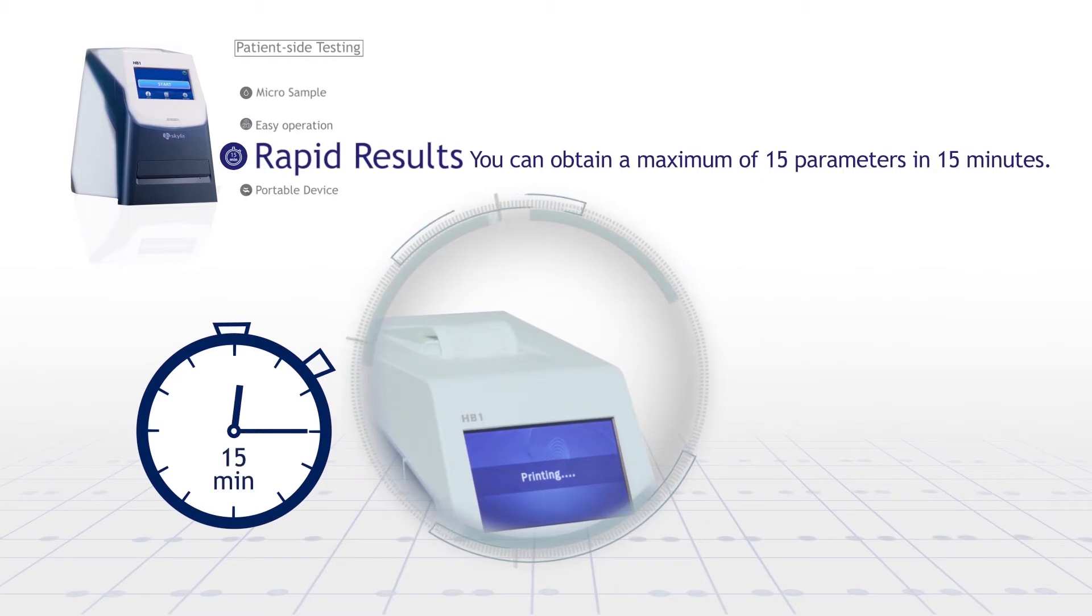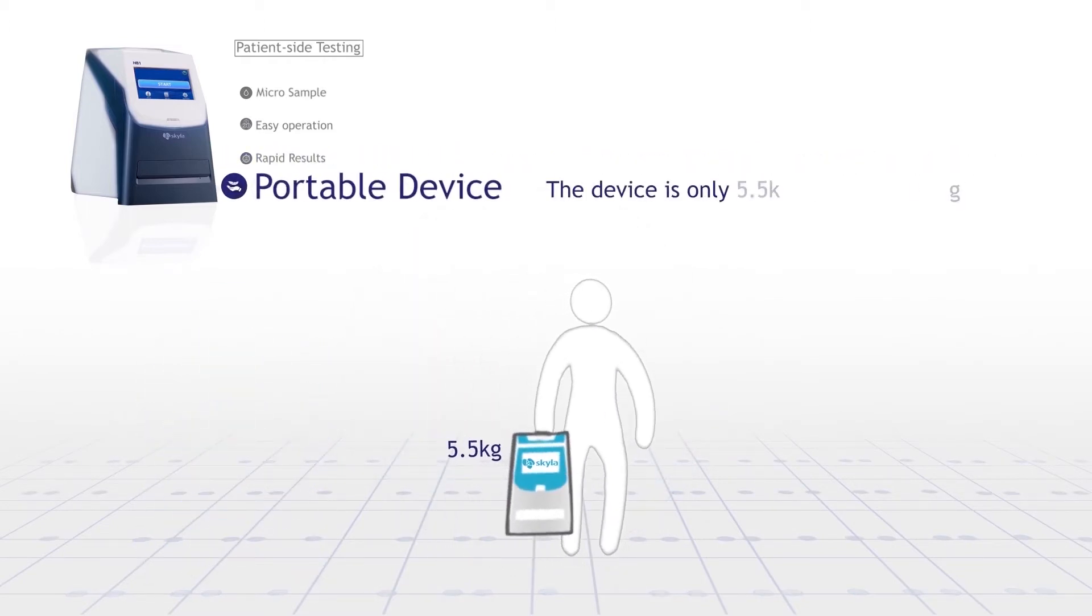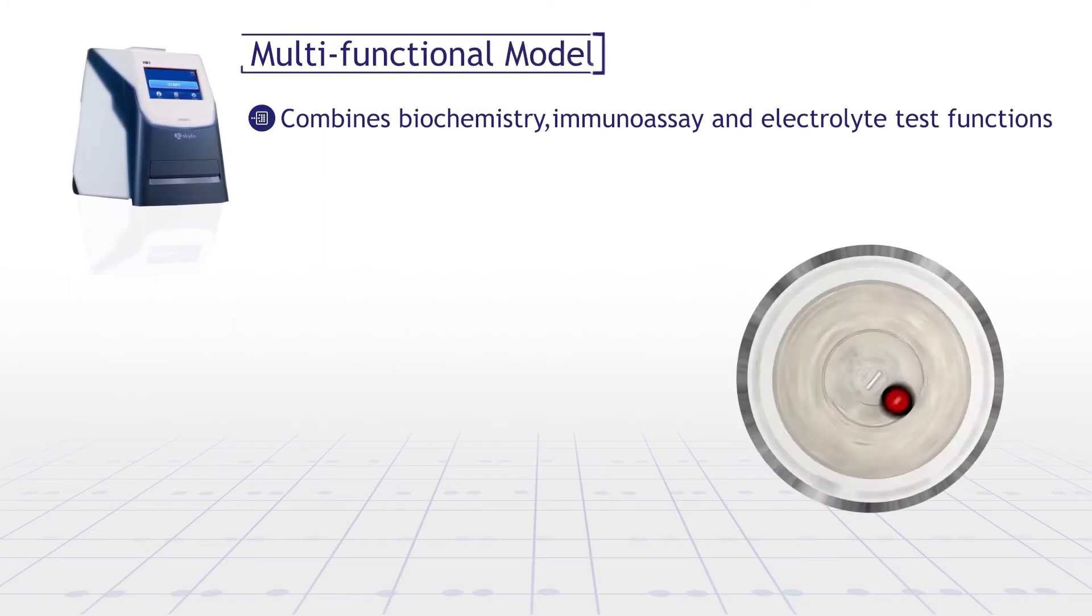Portable device with only 5.5 kilograms. Skyla HB1 is a multifunctional model combining biochemistry, immunoassay, and electrolyte test functions, which helps users save time, space, and money.